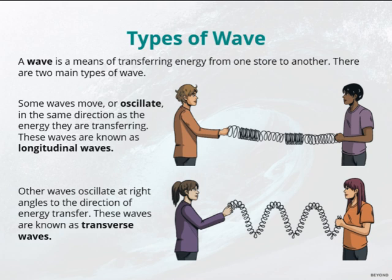Types of wave. A wave is a means of transferring energy from one store to another. There are two main types of wave. Some waves move or oscillate in the same direction as the energy they are transferring — these waves are known as longitudinal waves, as you can see here.